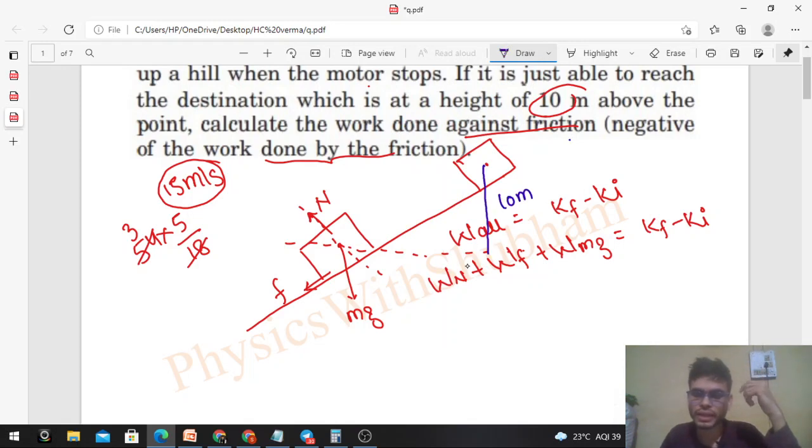Finally it will stop here. Final speed will be zero. So now what will be the work done by the normal reaction? That will be zero because normal reaction will always be perpendicular to the direction of motion. Work done by friction - that we have to find out. Work done by mg will be...